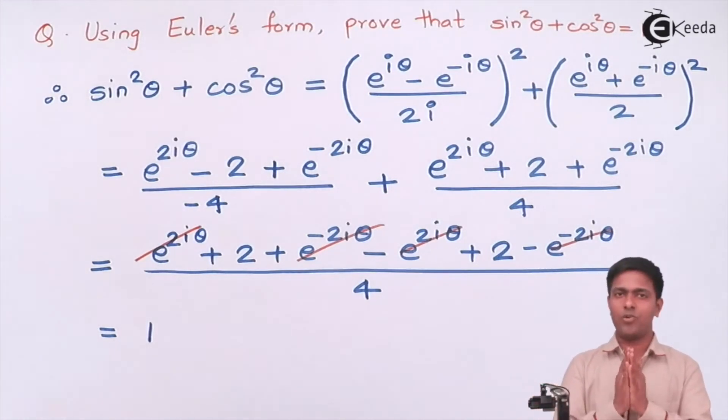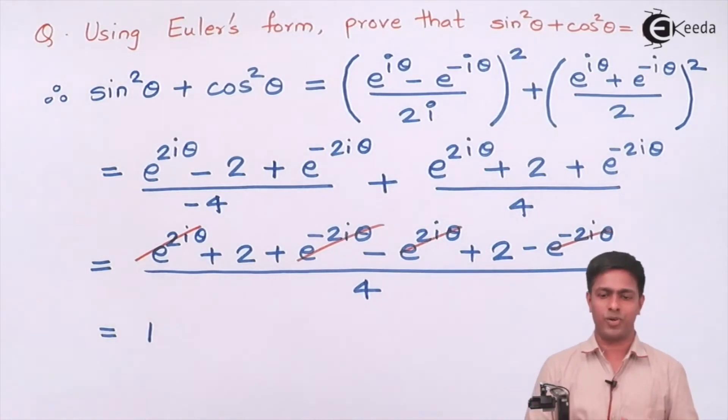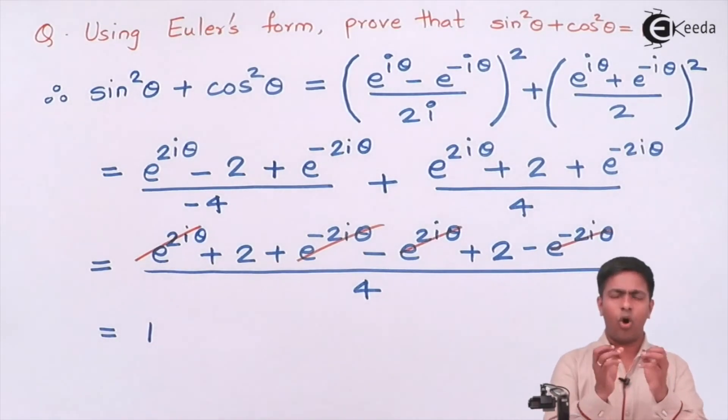So now you must have understood why sin square theta plus cos square theta equal to 1 by using Euler's identity. I'm sure that you like this explanation. If you want to learn more videos on engineering mathematics, stay tuned with ek.com where you can find me and all mathematics videos taken by me in one order. Thank you very much.